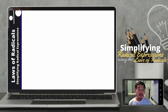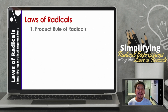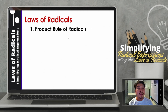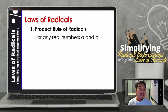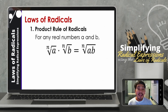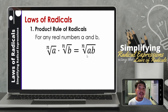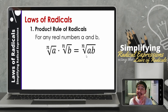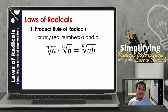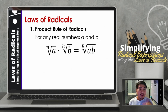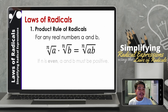So let us now go to the laws of radicals. The first one is the product rule of radicals. For any real numbers a and b, we can say that the n-th root of a times the n-th root of b is just equal to the n-th root of a times b. So those that are separate can be combined, and those combined can be separated — provided that the indices are the same. Just take note: if n is even, a and b must be positive; if n is odd, a and b can be positive or negative.